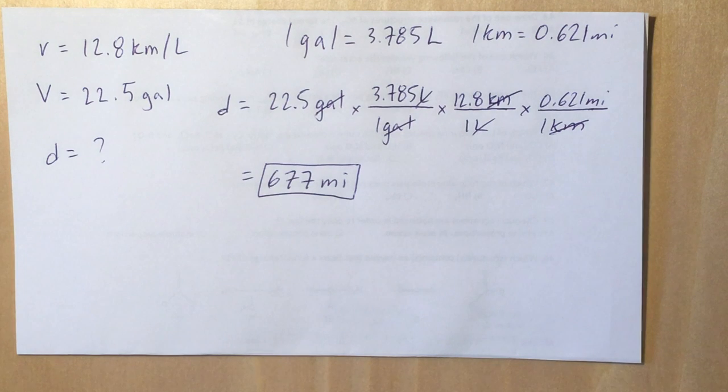And we'll just go through it. So distance is going to be, well, you start with 22.5 gallons. We want to convert that to liters so we can cancel out our gallons.